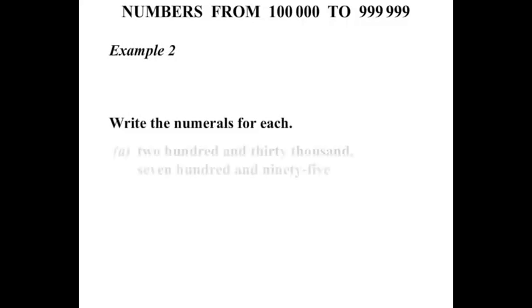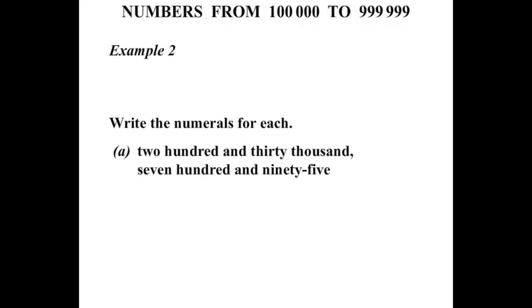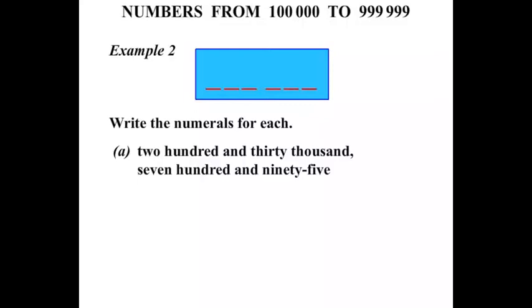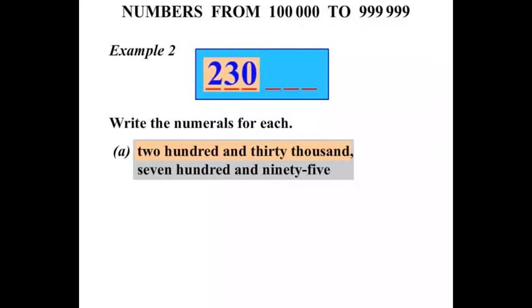Example 2. We need to write the numerals for each. The first one is 230,795. There are 6 digits — let's break it up into 3 digits and 3 digits with a thousands gap. The first three digits represent 230,000. Then we have 795 for our remaining three digits. So our answer is 230,795.